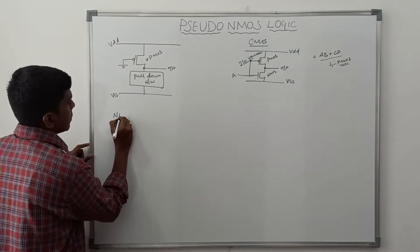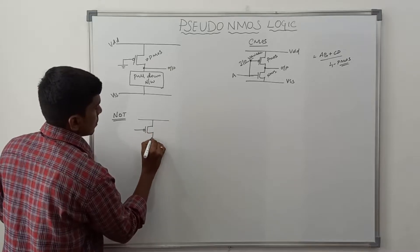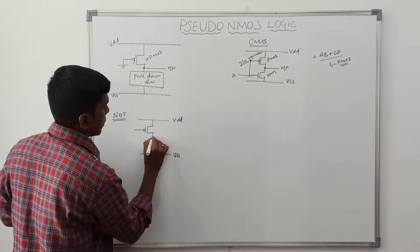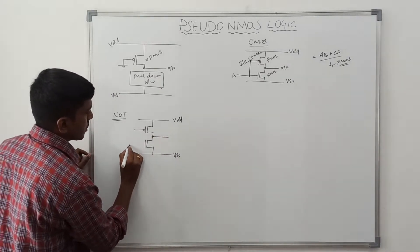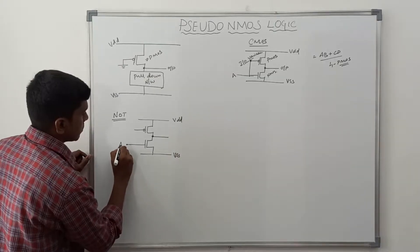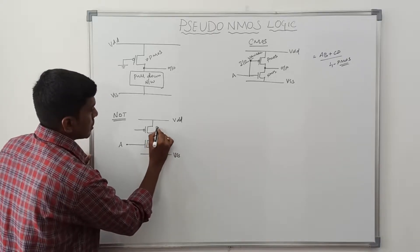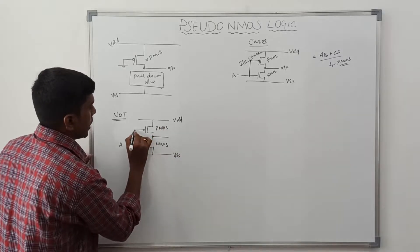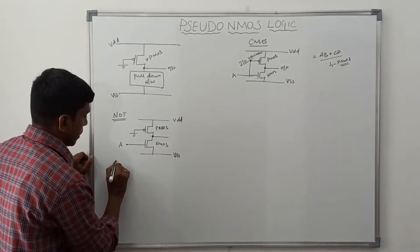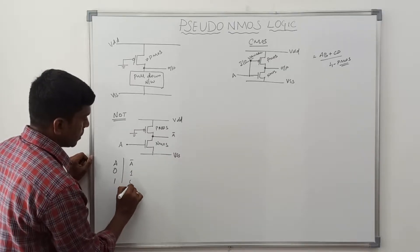Now I am going to design the NOR gate using pseudo-NMOS. VDD is at the top and VSS at the bottom. The output is taken between the PMOS transistor and the NMOS pull-down network. In pseudo-NMOS, inputs connect only to the pull-down network. Input A is connected to the gate terminal of the NMOS. The PMOS transistor gate terminal is permanently connected to ground. Verifying the inverter: when A is 0, output is 1; when A is 1, output is 0.